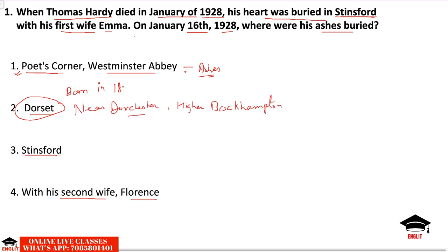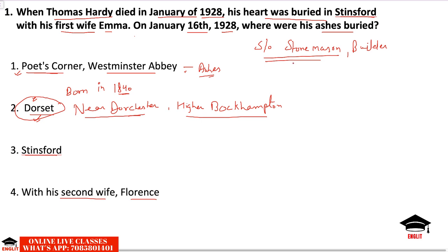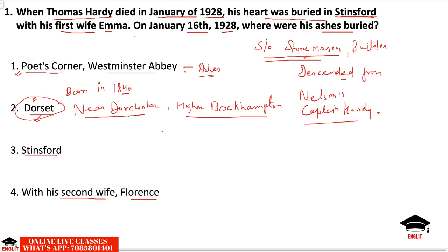Thomas Hardy was born in 1840 near Dorchester, Dorset, at Higher Bochampton. He was the son of a stone mason — a builder. He descended from Nelson's Captain Hardy. Why did he become a poet or novelist? Because his mother influenced him to read many books and created his interest in literature.